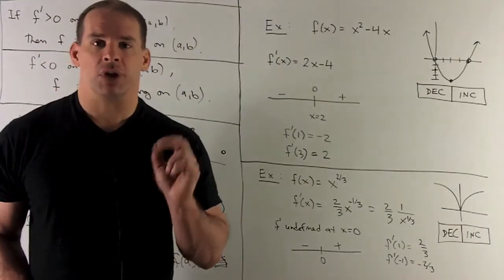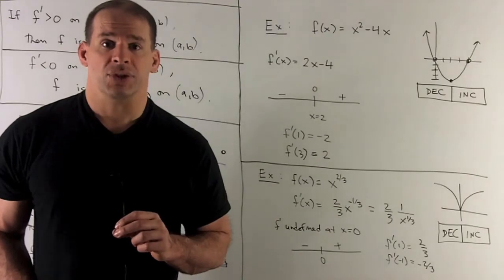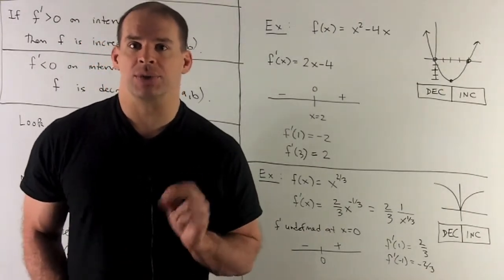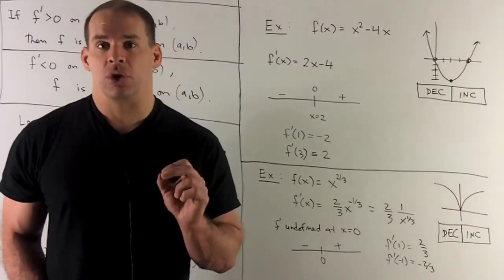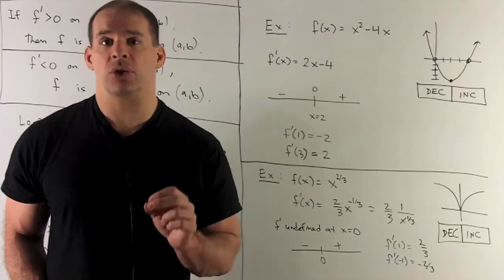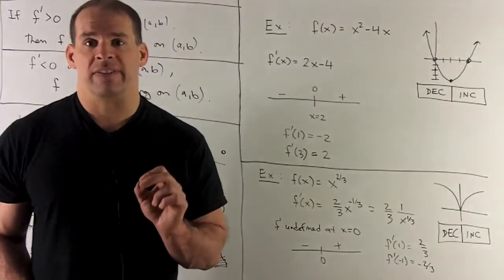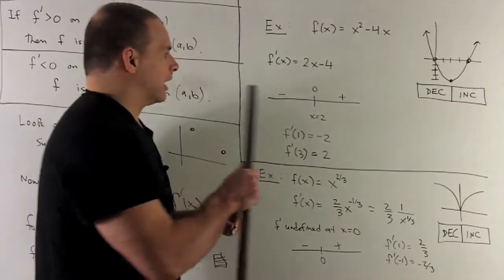Let's look at some examples. The first example is x squared minus 4x. This is a parabola. It's facing up. This vertex is going to be at x equal to 2. Now we're interested in increasing and decreasing. So I'm going to take the derivative. It's going to give me 2x minus 4. And I want to know where that derivative is positive or negative.